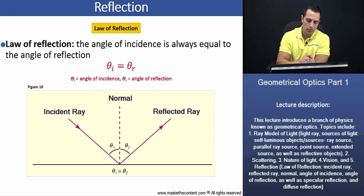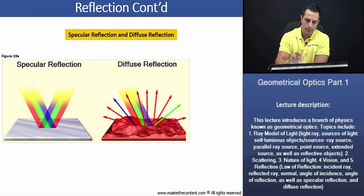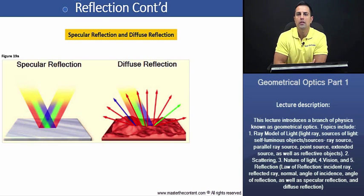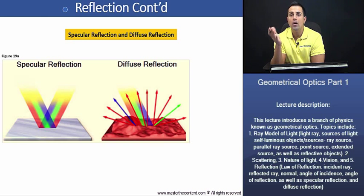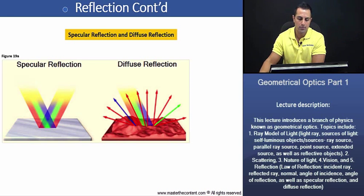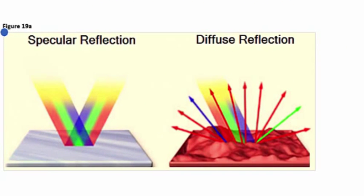Let's continue onto our next slide. The amount of light that is being reflected by an object, and how it's reflected, is going to be dependent upon the smoothness or texture of the surface. Looking at figure 19A, when a beam of parallel light rays reflect from a smooth surface, all the rays go off in the same direction. This is known as specular reflection.